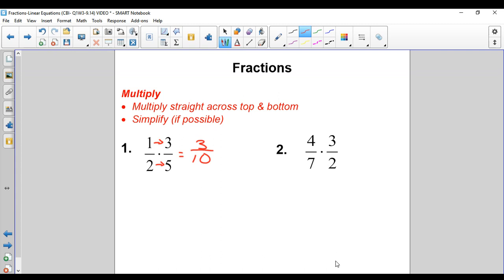Second one, same deal. Four times three is twelve, seven times two is fourteen. Now this one can reduce. They're both even numbers, so we can at least divide them both by two. So let's start there. We end up getting six sevenths. Now that's all we can do. That's our answer.